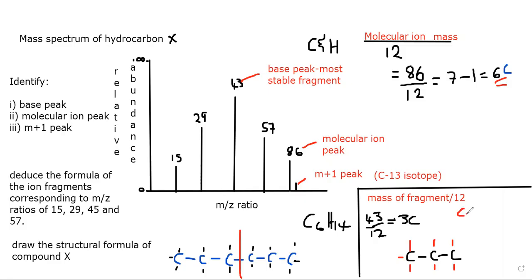So this fragment is C3. If it were a complete alkane with three carbons, it would have eight hydrogens — C3H8. But for the fragment, it has one less hydrogen, so the fragment formula is C3H7.